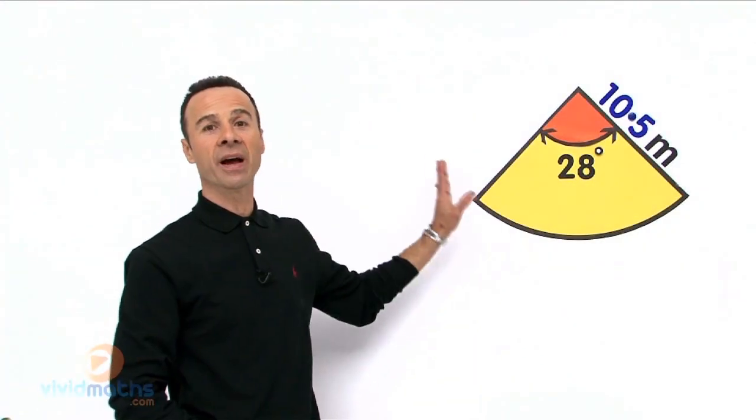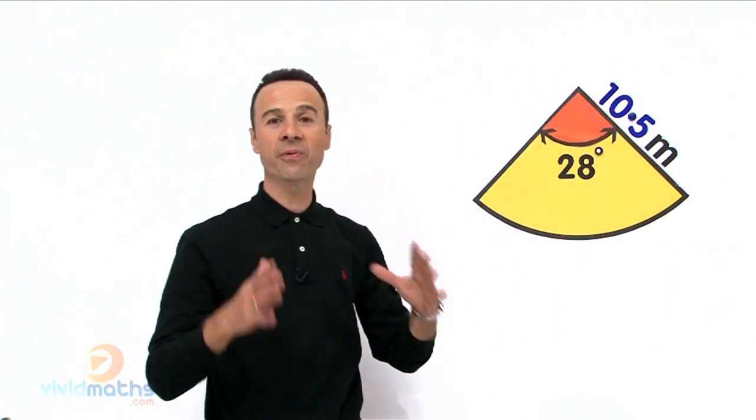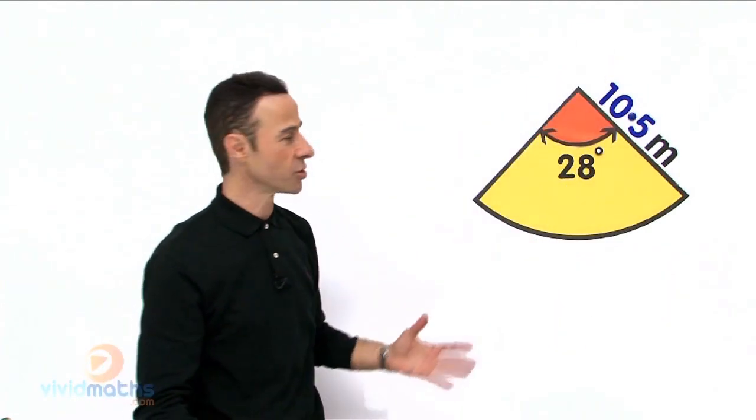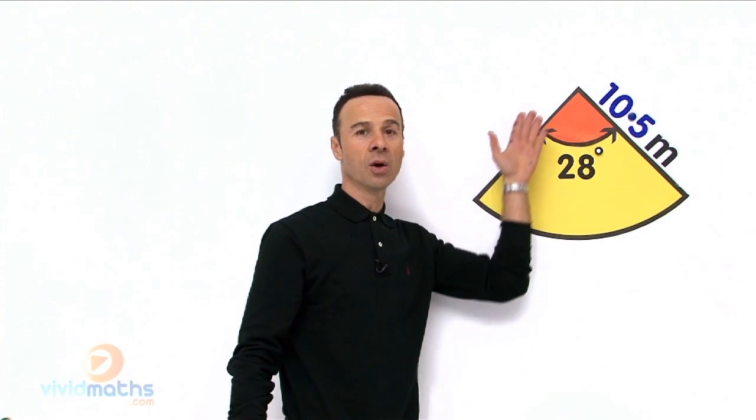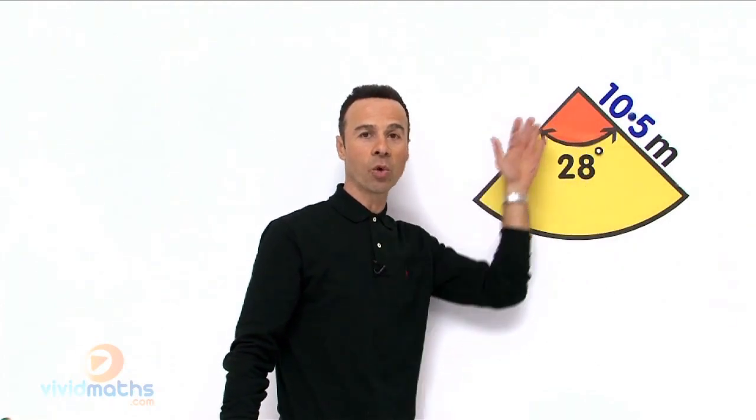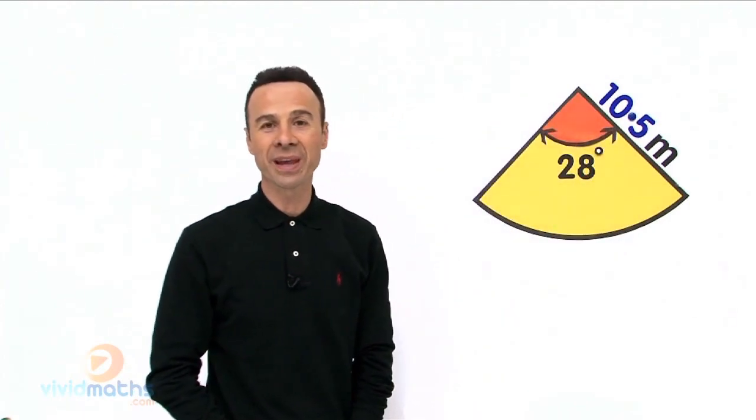We are looking at a sector of a whole circle, which means it is a fraction of a whole circle. So this part here, all of this, the orange and yellow, all of that is what we are looking for—the area.